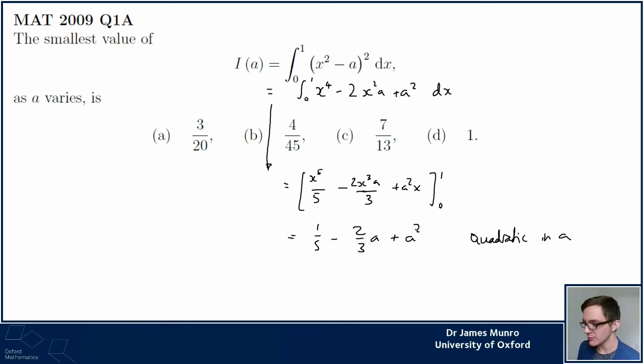We want the smallest value of this quadratic, it's a happy quadratic looking like this, so it does have some sort of minimum somewhere. Different ways to find the minimum of a quadratic, of course we could differentiate, I think in this case I'm a fan of completing the square, because completing the square I guess forces you to do the calculation where you work out the minimum value as well.